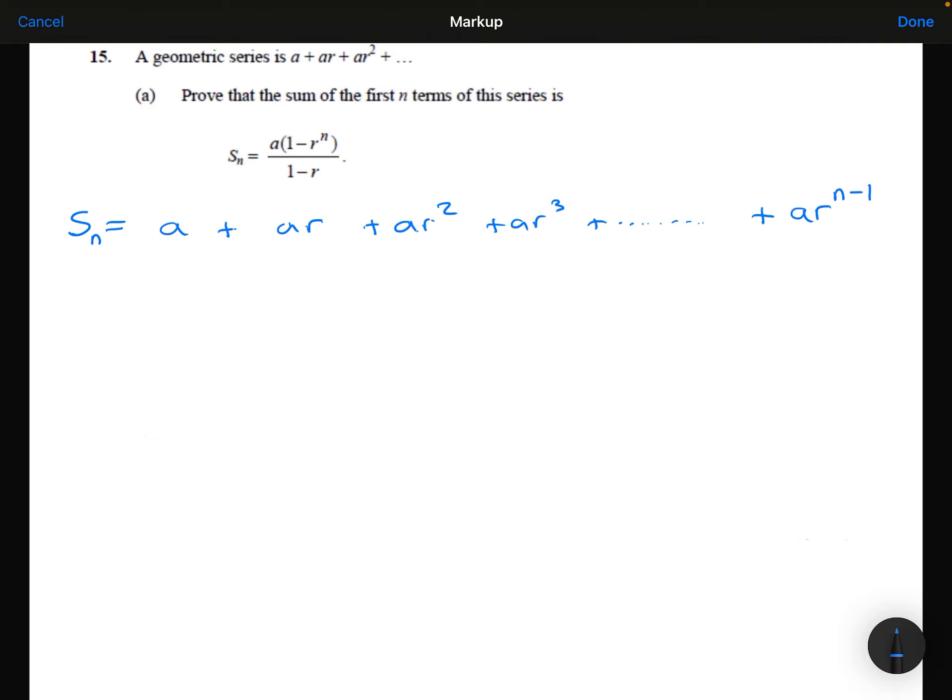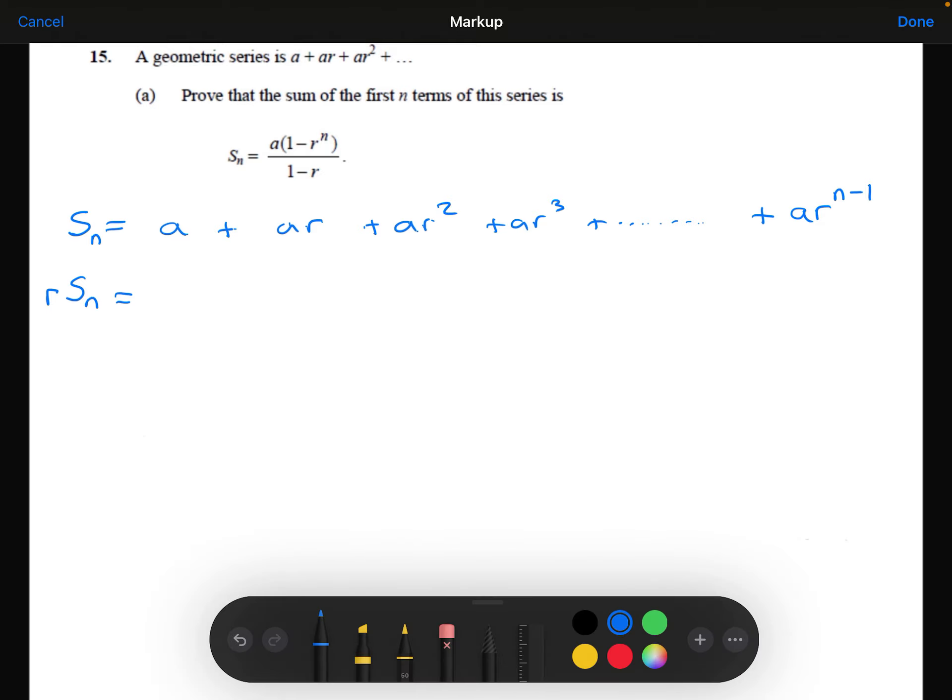What I'm going to do now is write down exactly the same thing underneath, but multiply it all by R. So I will have R times the sum of the first n terms. So A times R will be AR. AR times R will be AR squared. AR squared times R is going to be AR cubed. AR cubed times R is going to be AR to the power of 4 and so on.